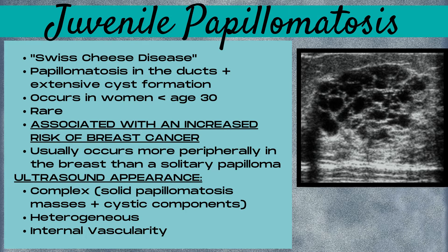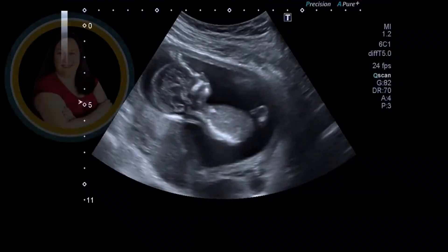The ultrasound appearance of juvenile papillomatosis is going to be complex. There will be solid papillomatous masses plus multiple cystic components present. It will be heterogeneous with internal vascularity.